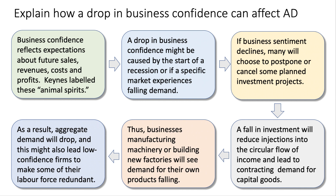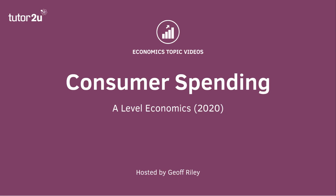This might also lead to lower-confidence firms making some of their labour force redundant, so business confidence going down may cause firms to cut the size of their workforce. That fall in jobs and incomes will again have second and third round effects through what's called the negative multiplier. Hopefully you can see how a fall in business confidence can often have quite a powerful and immediate effect on one or more components of aggregate demand. In the next video in this series on AD, we'll turn our attention to consumer spending.